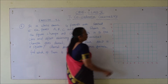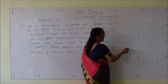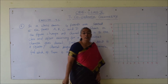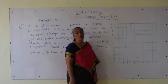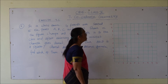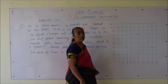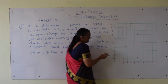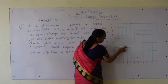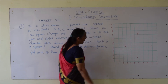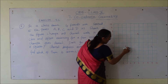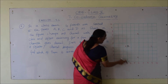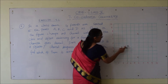So 4 students are sitting at the places A, B, C, D. We have to check whether they are forming a square using the distance formula. First let us plot the point A. The coordinates of A are 3 comma 4, so A is (3, 4).